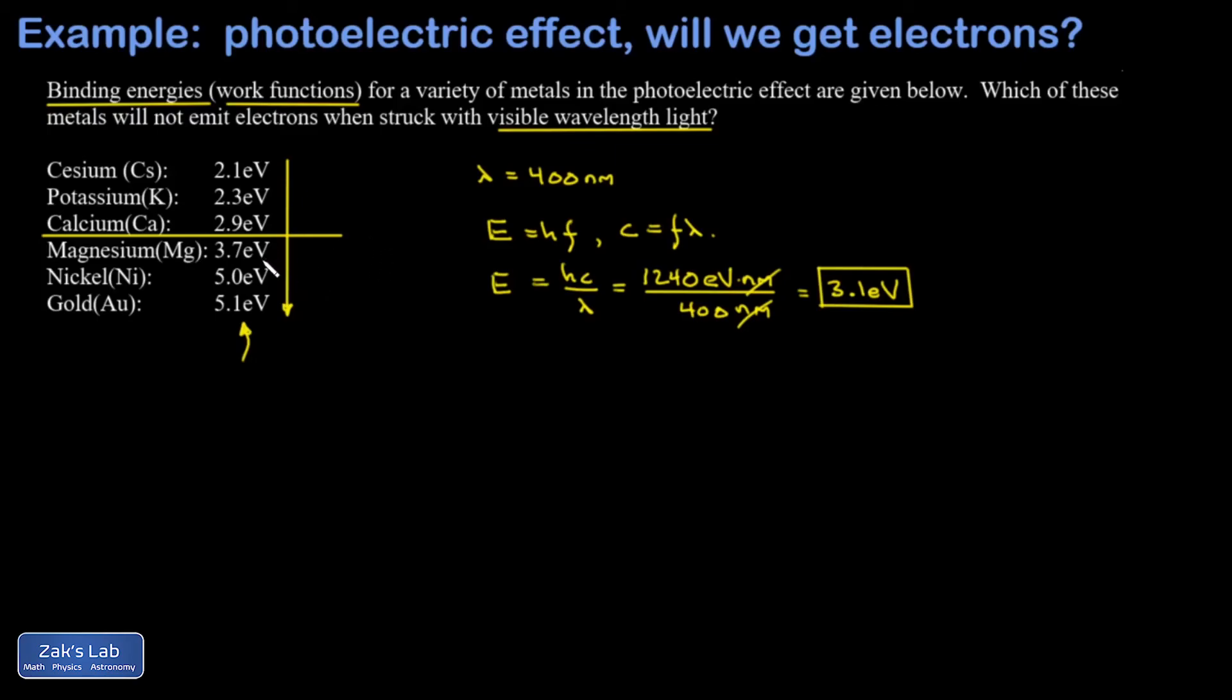Starting with magnesium, my binding energies are too high for visible light to remove an electron from the sample. So if you bathe one of these samples in just visible wavelengths of light, you're not going to see any electrons removed.